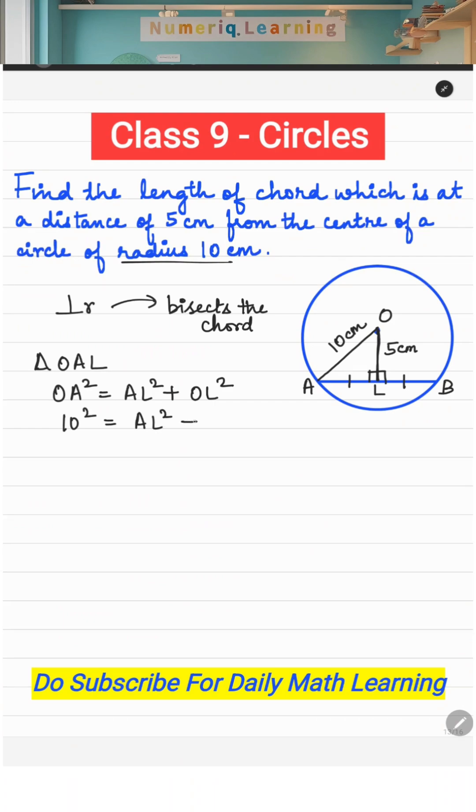So 100 minus 25 equals AL². This is 75 equals AL². And AL is approximately 8.66. It's the square root of 75.